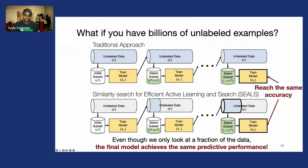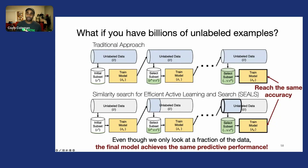Surprisingly, we find that the resulting model still achieves the same predictive performance. This means we only need to process a small fraction of the data, speeding up the process end-to-end while getting the same accuracy.